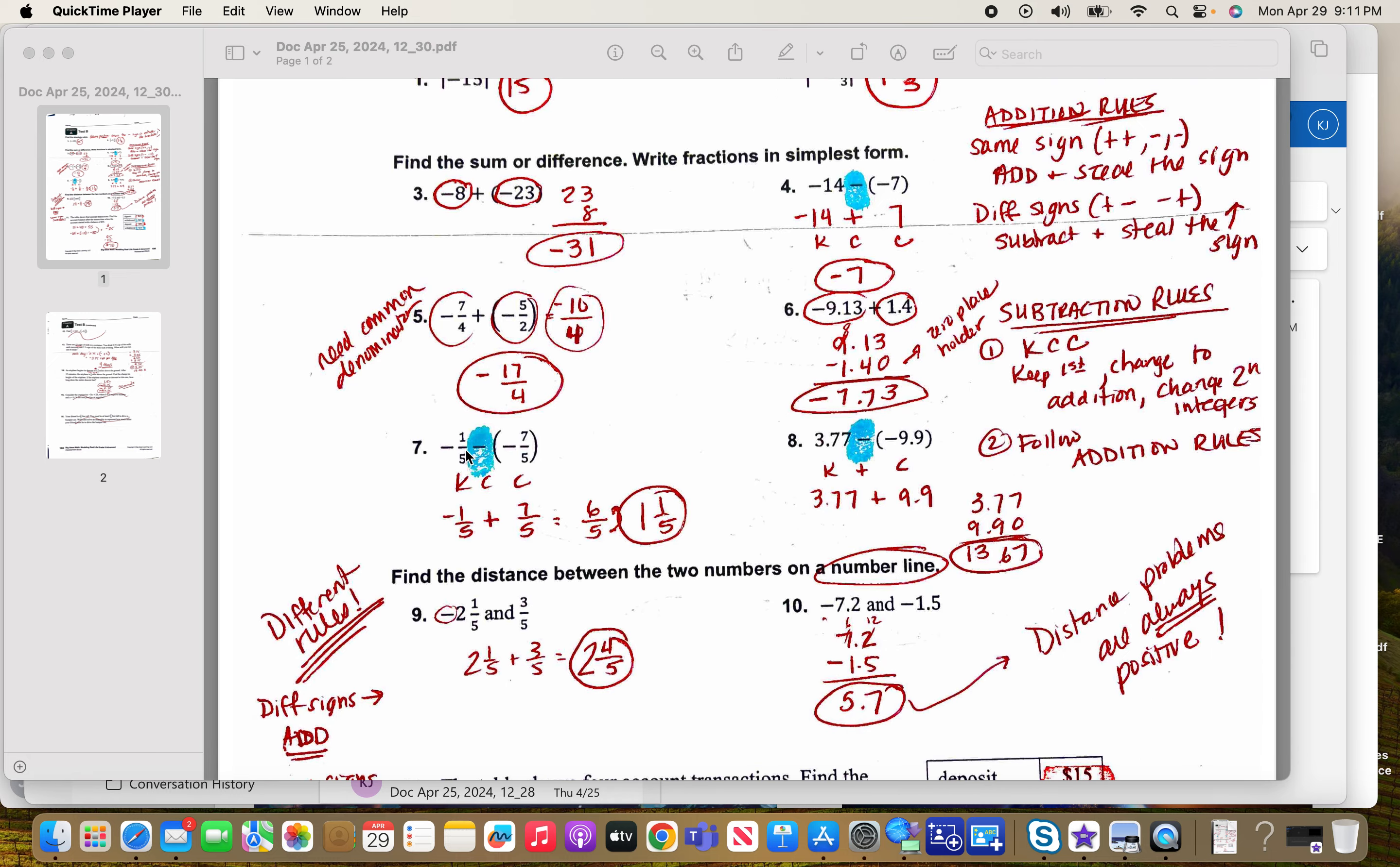Down here, we need to keep the first, change to addition, change this to a positive 7-fifths. Since we have the same denominators, we can go on, and since they're different signs, we're going to find the difference between the two. So the difference between 7-fifths and 1-fifths is 6-fifths. It is positive because there's more positives than negatives. And we're going to convert it back by putting 5 into 6 once, with 1 left over, and bring over the 5 for 1 and 1-fifth.